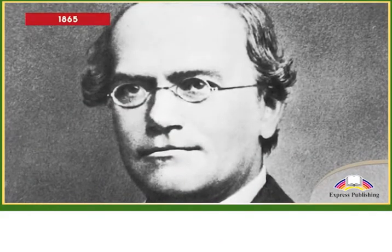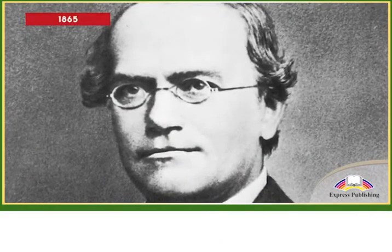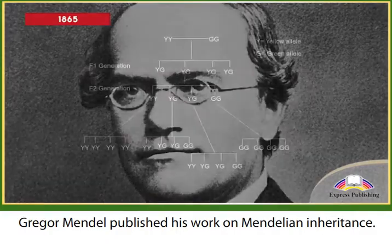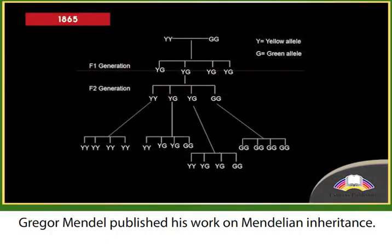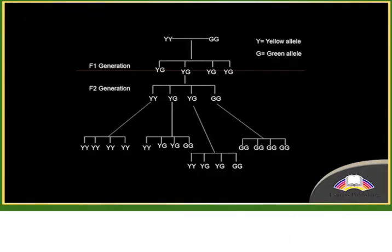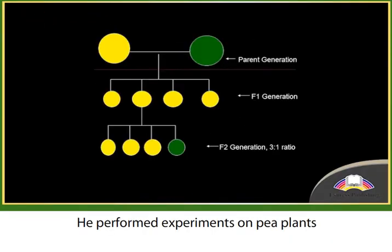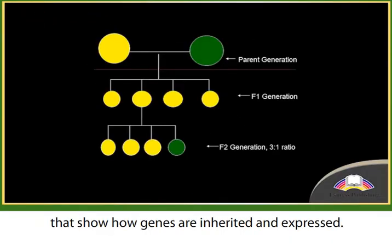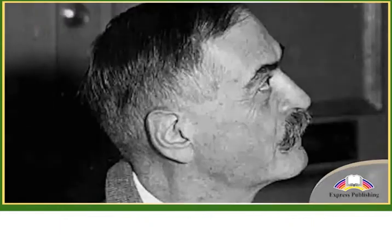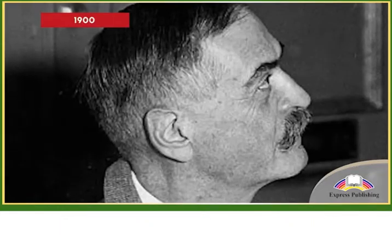1865: Gregor Mendel published his work on Mendelian inheritance. He performed experiments on pea plants that show how genes are inherited and expressed.